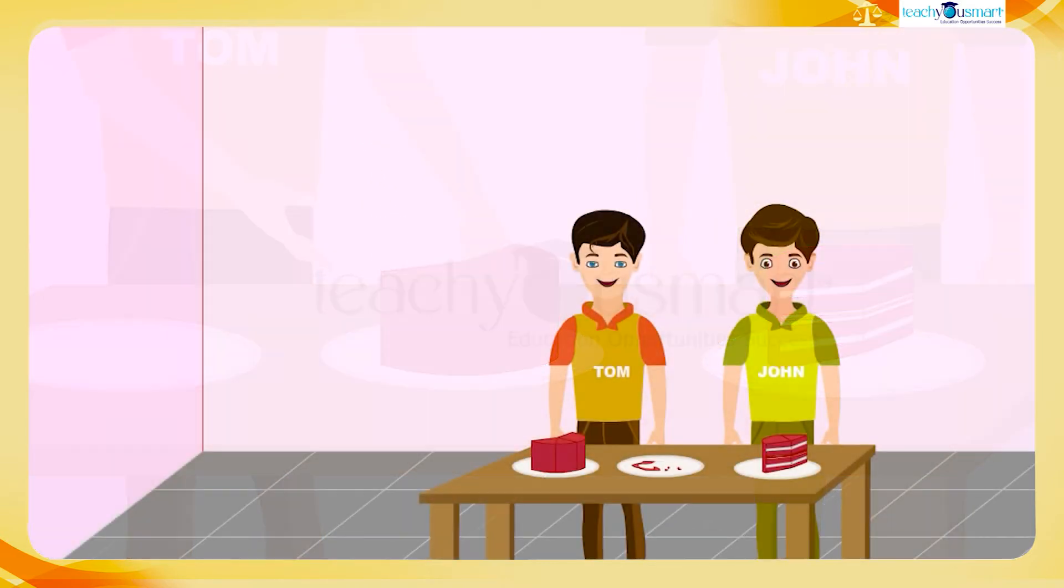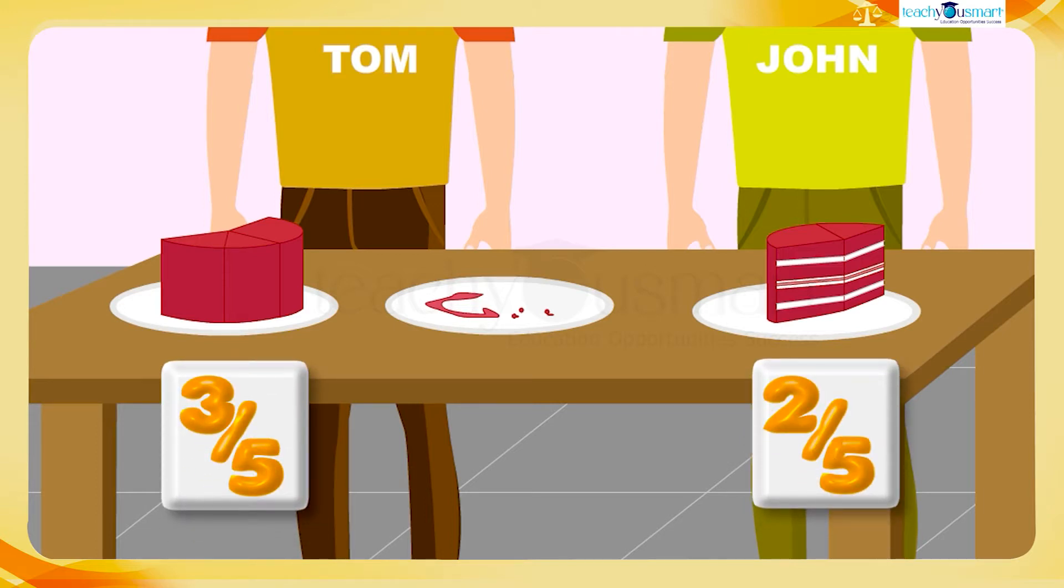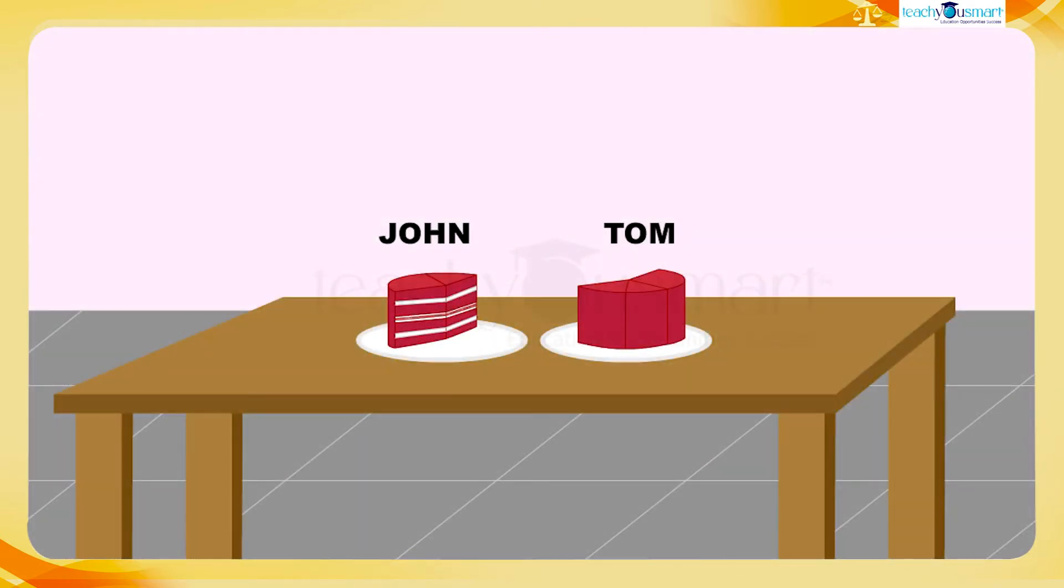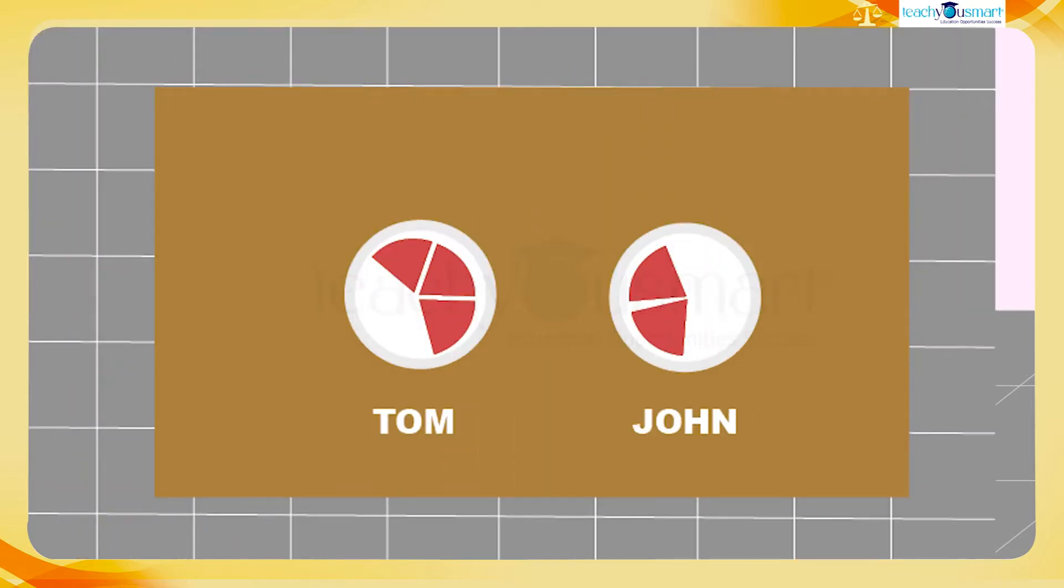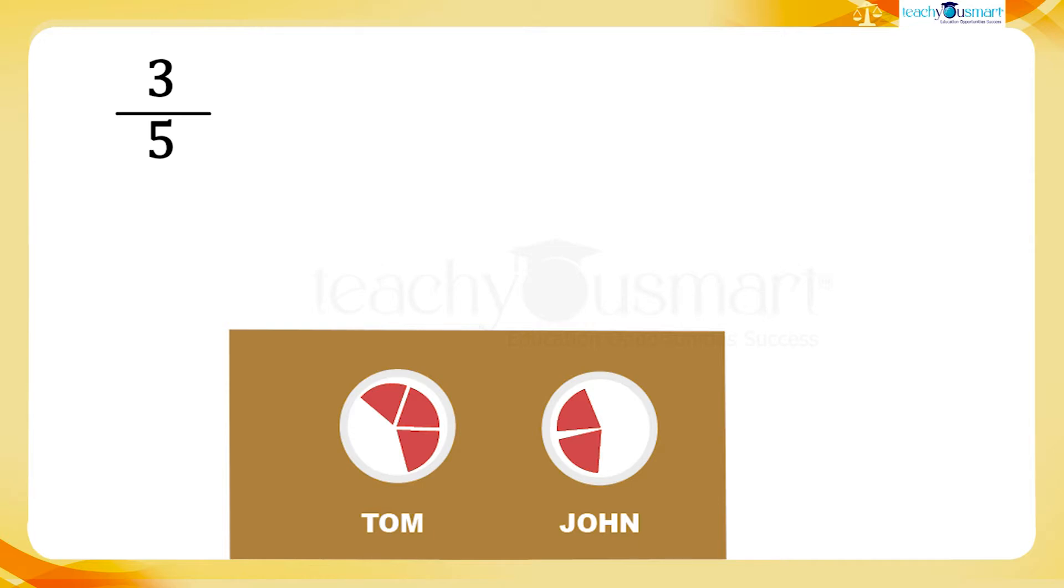While comparing their pieces, Tom has more cake than John. It can be expressed as a fraction. Tom took three out of five and John took two out of five. Here we compared the number of cake pieces. This comparison can also be done by using percentages. We know the word percent means per 100 or for every 100. Here Tom took three out of five. Let's see how we can convert this into percentage.